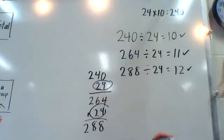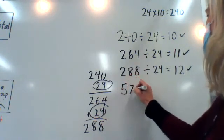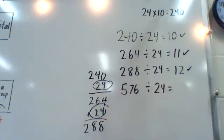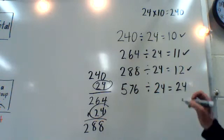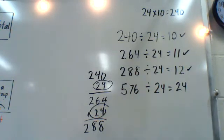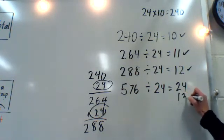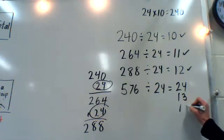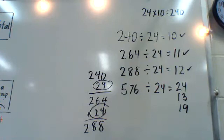The next one we have, we have two more. 576 divided by 24. If I had that larger dividend, now how many groups of 24 can I make? Okay. Right here? 24. Maybe 24. 13. Maybe 13. Yep. Maybe 19. 19. Okay. Who wants to defend one of those answers?